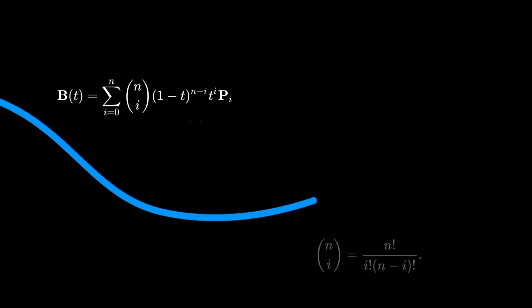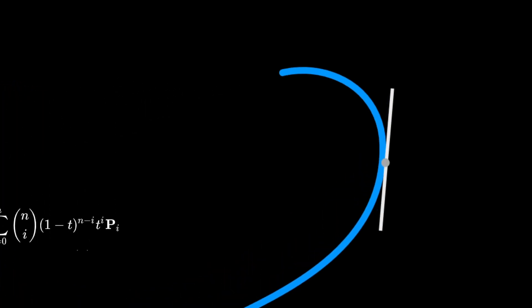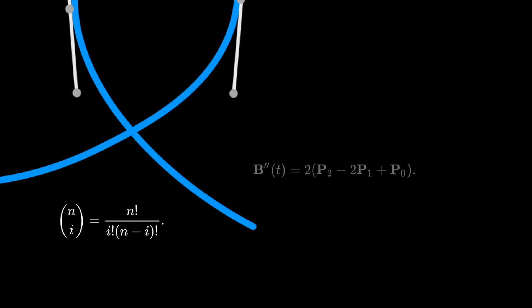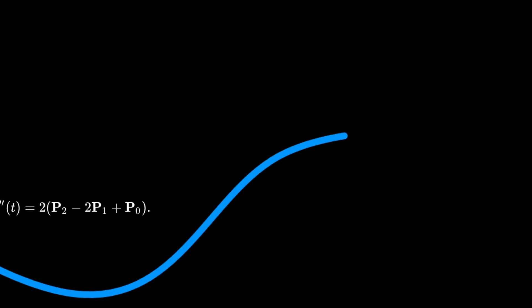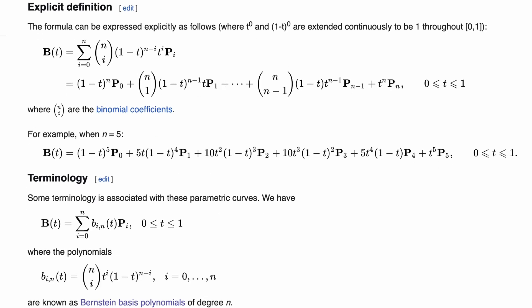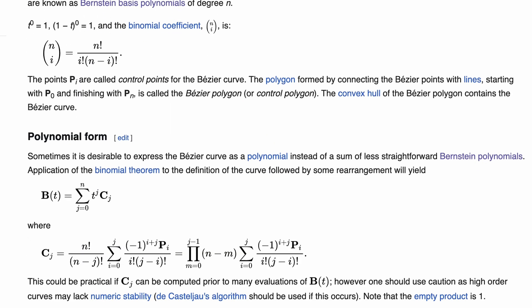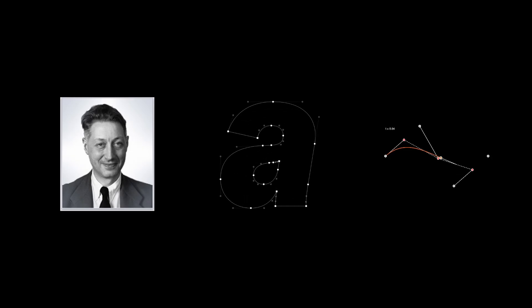A Bezier curve is a parametric curve defined by a set of n plus 1 control points in a vector space. The curve is express— whoa, whoa, whoa, that's a lot of math. This is not that video. So what is this video? Well, sometimes these videos over-index on the technical specifications, and they overlook the history, practicality, and design. And that's what I want to talk about.